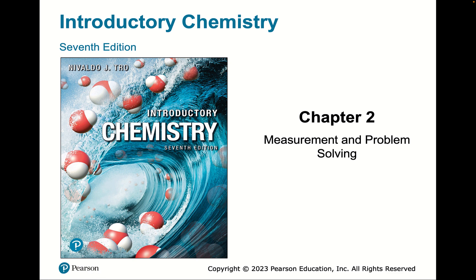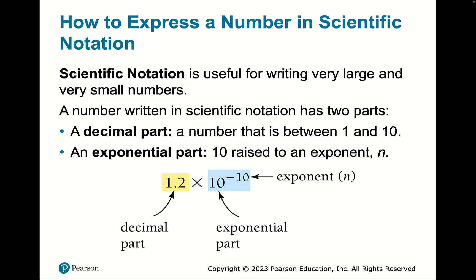We're on Chapter 2, talking about measurement and problem solving — more about scientific notation, especially significant figures. We oftentimes use scientific notation to describe both very large and very small numbers. With the metric system, we can use the same system to talk about very big things like stars and very small things like atoms.